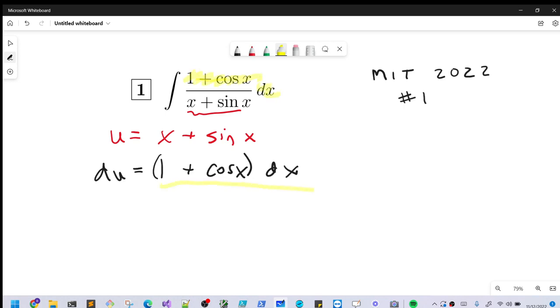What we'll do is we're going to have the integral of du over u, and that's just going to be ln absolute value of u plus c.